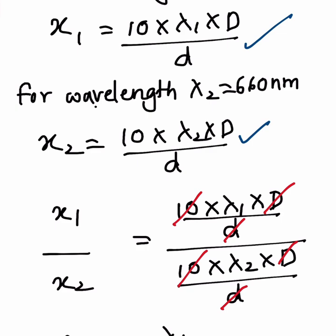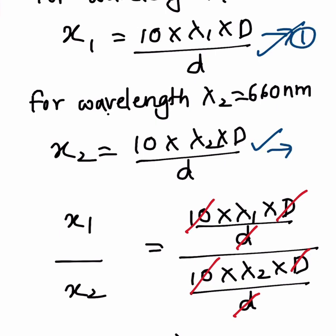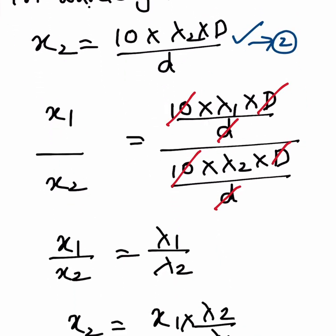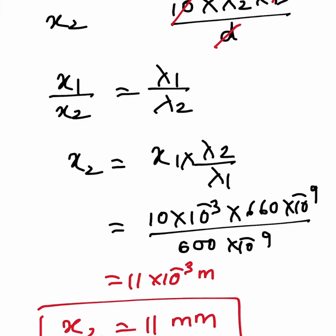Therefore, dividing one equation by the other: x₁ / x₂ = (10·λ₁·D/d) / (10·λ₂·D/d). The 10, capital D, and small d all cancel, giving x₁ / x₂ = λ₁ / λ₂. Rearranging, x₂ = x₁ × λ₂ / λ₁.